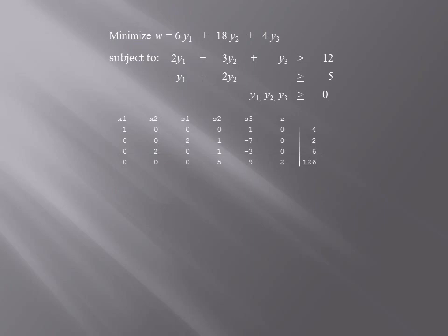Now I will discuss how you get the solution to the given minimum problem from the solution to the dual. The maximum z is equal to 126 divided by 2, or 63. That turns out to always be equal to the minimum w. So the minimum w in this example is equal to 63. What's just as important is what values of y1, y2, and y3 give the minimum w. Look at the bottom row — this is where you will find the values for y1, y2, and y3.